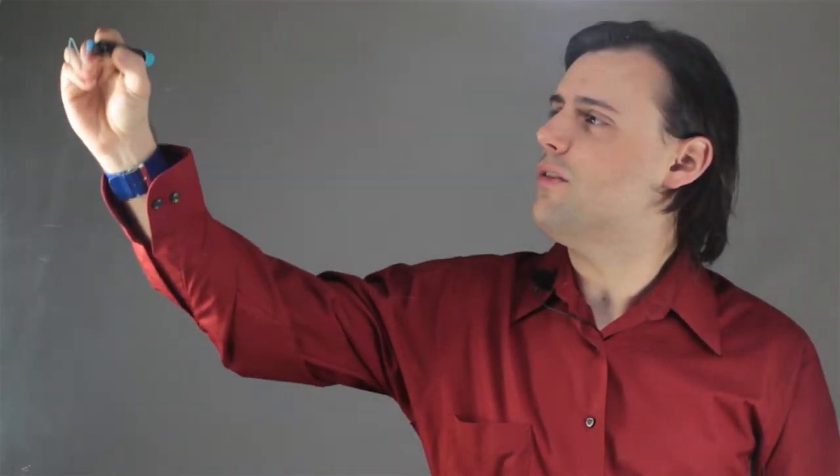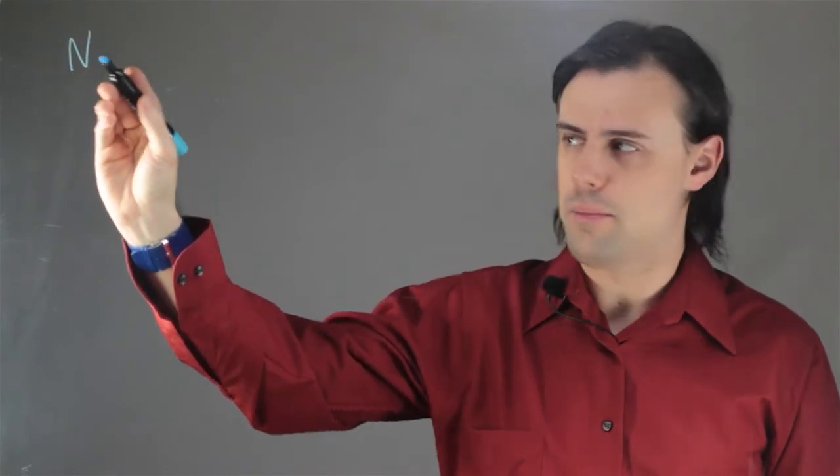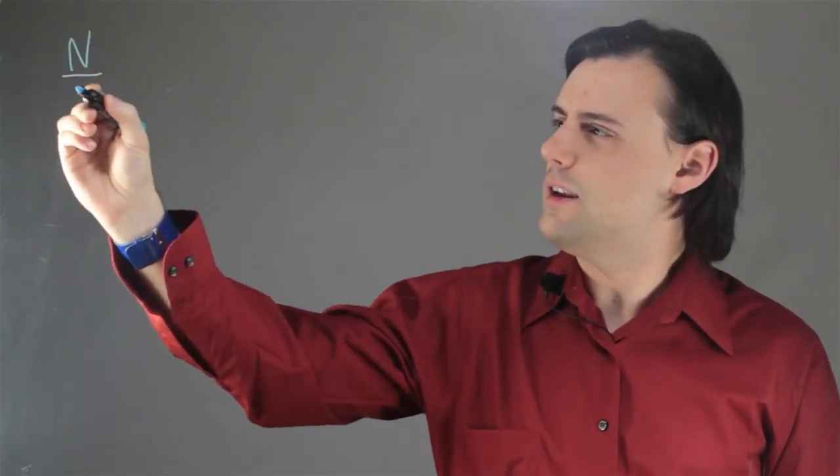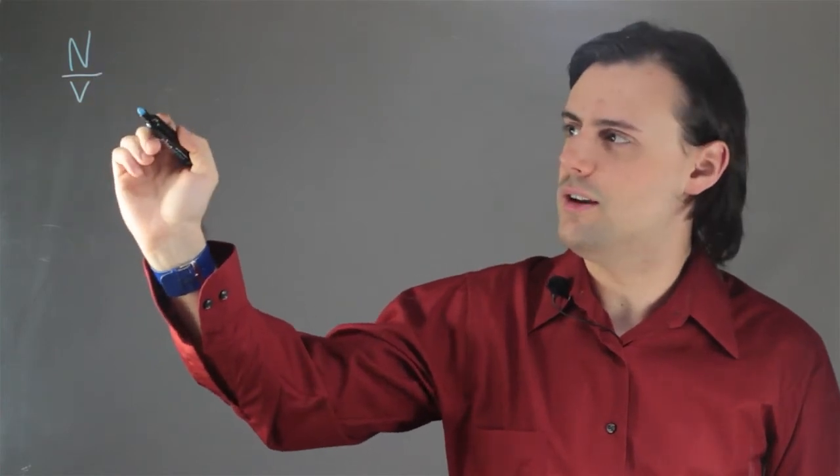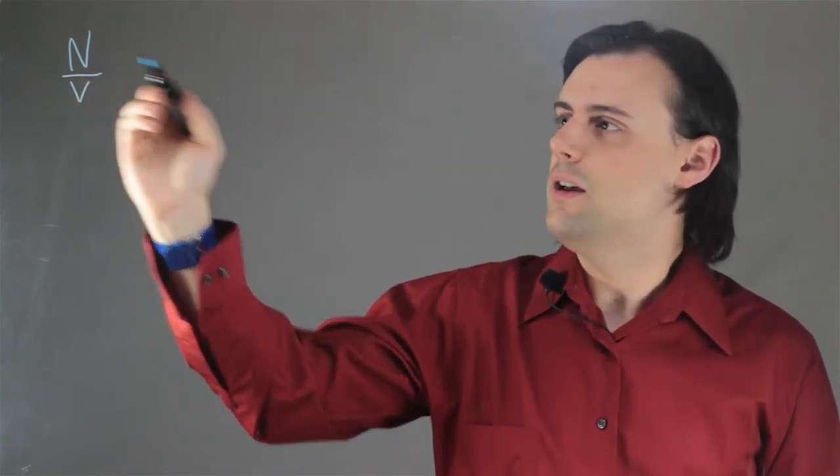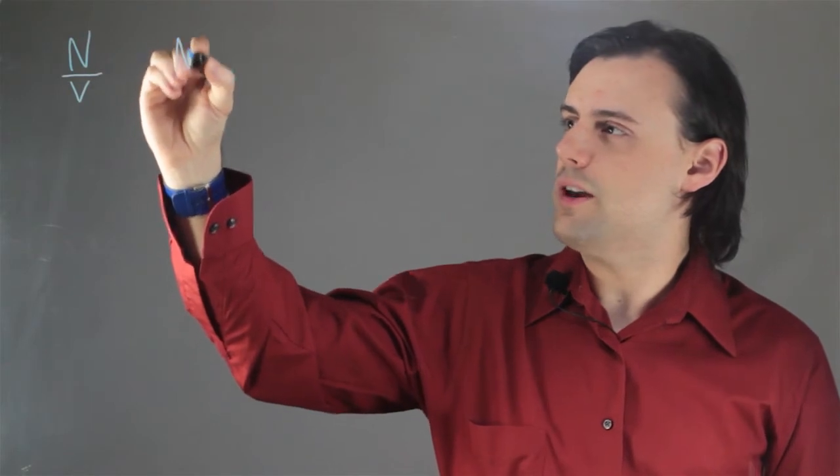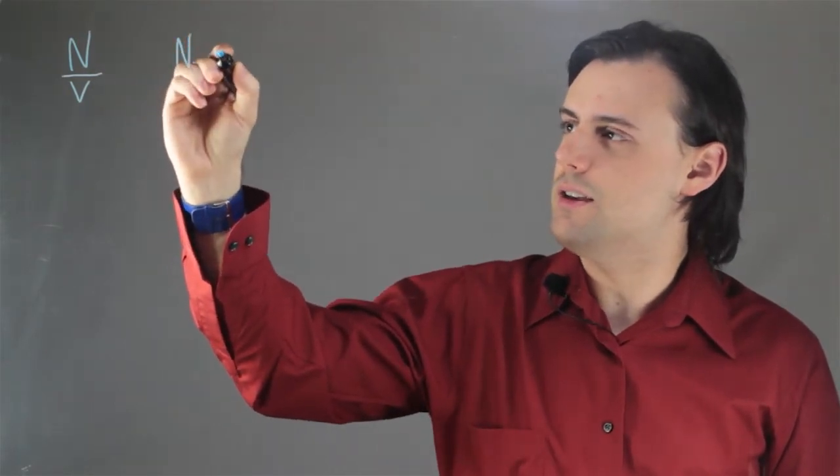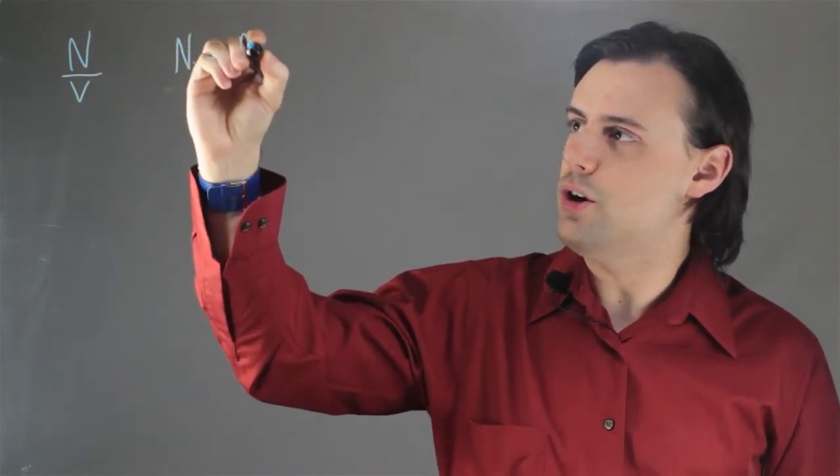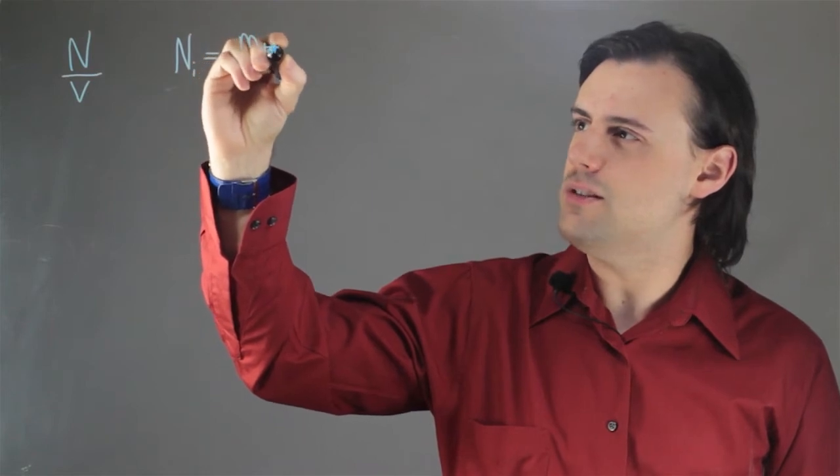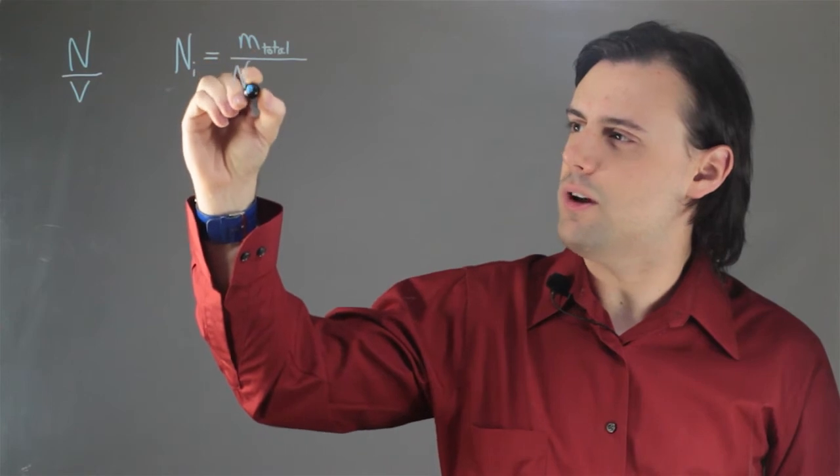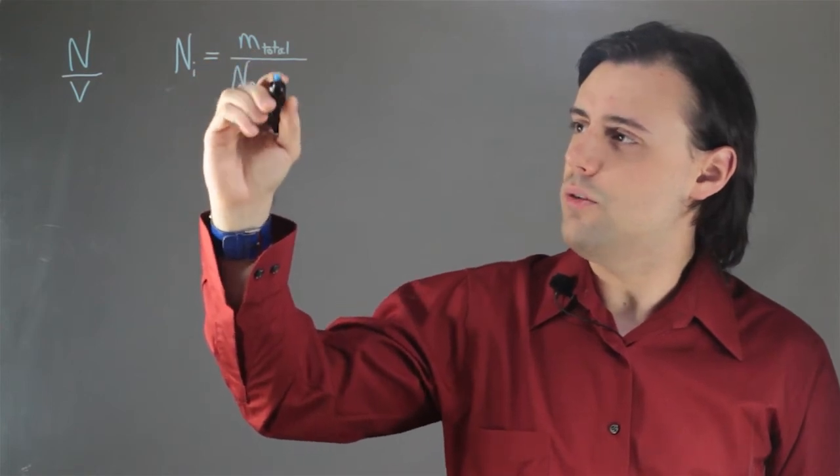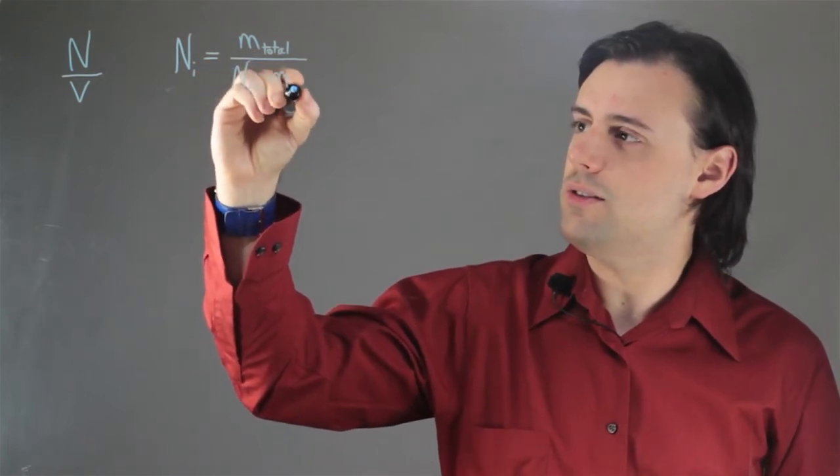Molarity is defined as the number of moles, denoted by the capital letter N, divided by a given volume in which these moles inhabit or occupy. The number of moles for a species I is given by the total mass of the species in the compound divided by Avogadro's number and also divided by the mass of the species. The units is in moles or just mole for short.